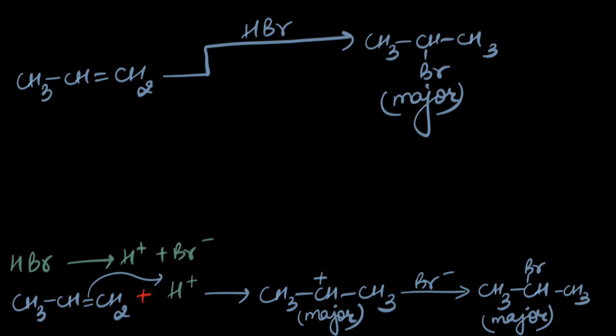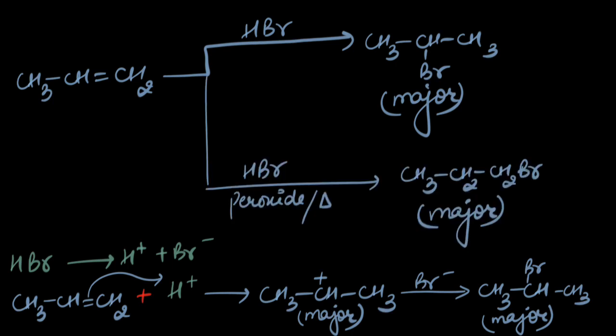While if we treat the same alkene with HBr in the presence of peroxide and heat this mixture we get the anti-Markonikov product as the major product. Because the mechanism is entirely different. It is a free radical mechanism where bromine attaches itself first and we get a more stable radical that drives the reaction into the formation of this product as the major product.